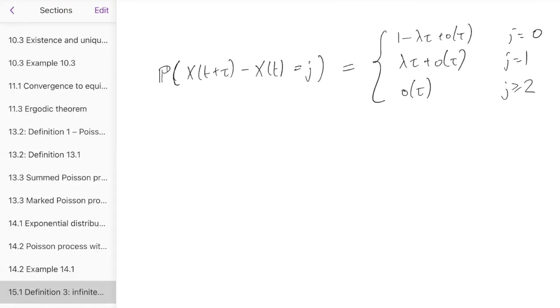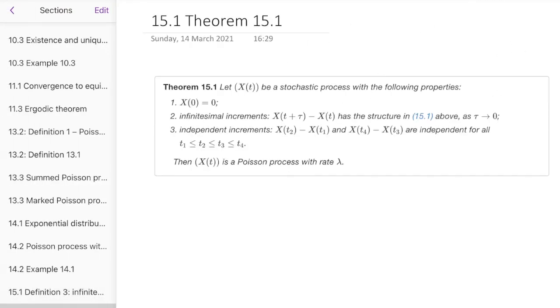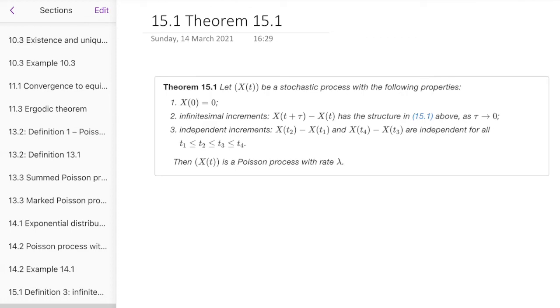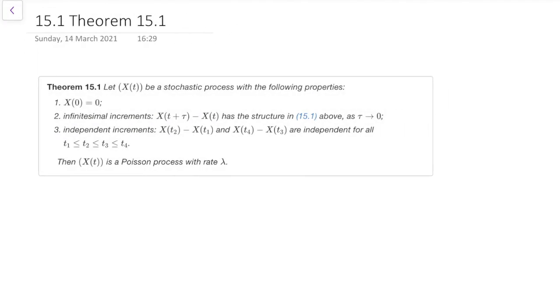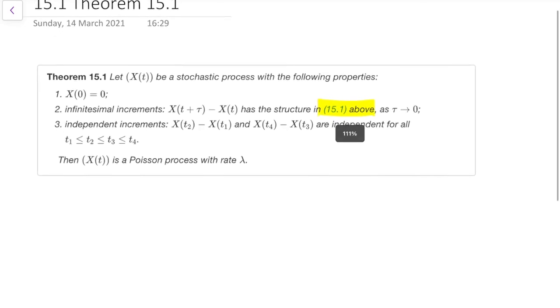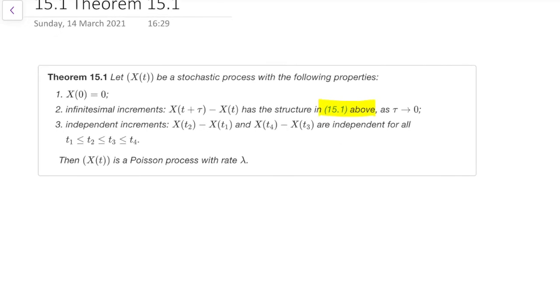It turns out that we have a theorem here, which is consider a stochastic process with the above properties. When I say the structure above, I mean the one that we just wrote down about the probability of X(t + tau) minus X(t) being j. So those different probabilities of j. And this theorem says we have a Poisson process. So in other words, even though we wrote down very mild assumptions, we ended up with a Poisson process given this structure.